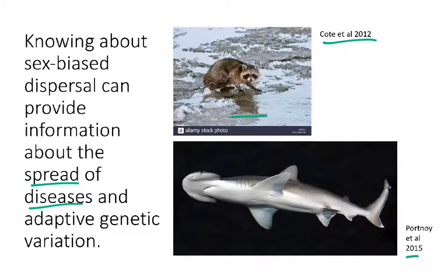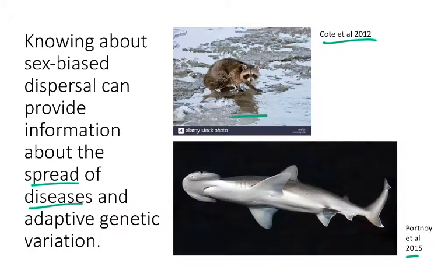The other example shown here is with bonnethead sharks. They also found evidence for male-biased dispersal, meaning males are the ones moving around. This means males are facilitating movement of potentially adaptive genetic variation between locations and environments. So in this case, it's especially important to conserve males, because they're spreading adaptive genetic variation important for populations to adapt to changing environments.